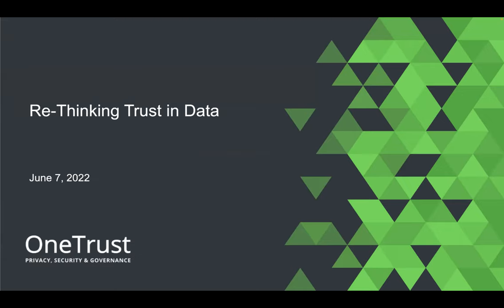Now let me introduce our speaker for today, Shane Wiggins. Shane serves as a product line manager at OneTrust, the trust intelligence platform, unlocking every company's value and potential to thrive by doing what's good for people and the planet. OneTrust connects privacy, GRC, ethics, and ESG teams, data and processes, so all companies can collaborate seamlessly and put trust at the center of their operations and culture. In his role, Shane supports OneTrust data governance, including data discovery, data catalog, and AI governance product lines. With that, I will turn it over to Shane.